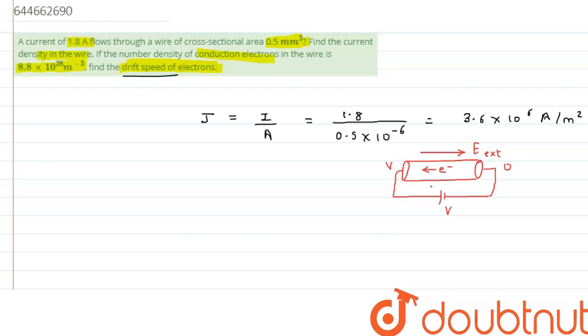We are not going into the derivation part. We will just use the formula: if electrons are flowing, the current is given as I = n·e·A·vd. Here vd is the drift velocity of electrons, A is the area of cross section, e is the charge on the electron, and n is the charge density.